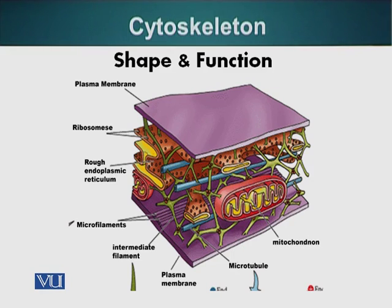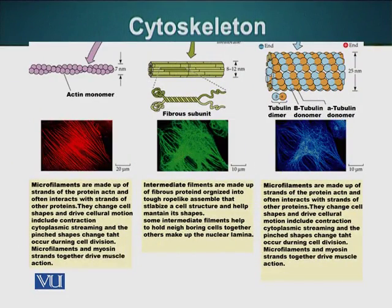Cell function is very important and it is dependent upon the cell's shape. The cell's shape is basically the responsibility of the skeleton which is present in the cell. The cell has three different types of skeletal elements: microfilaments or actin filaments, intermediate filaments, and microtubules. All these skeletal elements are polymers — they are polymers of smaller molecules which are linked together to form these filaments.